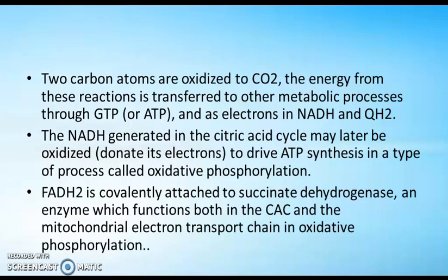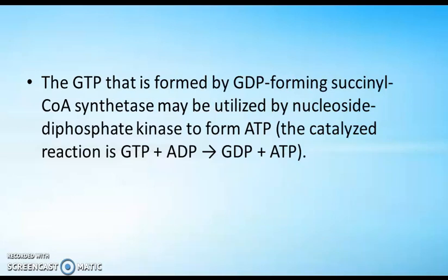The next intermediate molecule is FADH2, which is covalently attached to succinate dehydrogenase, an enzyme that functions both in the citric acid cycle and in the mitochondrial electron transport chain. In oxidative phosphorylation, the GTP formed by GDP-forming succinyl-CoA may be utilized by nucleoside diphosphate kinase to form ATP. The catalyzed reaction is: GTP + ADP → GDP + ATP.